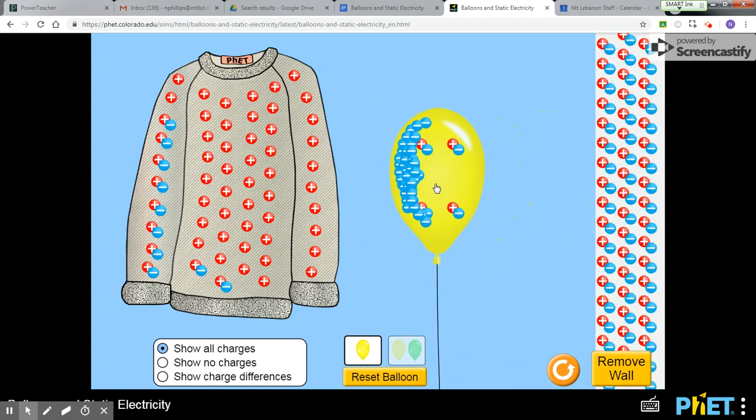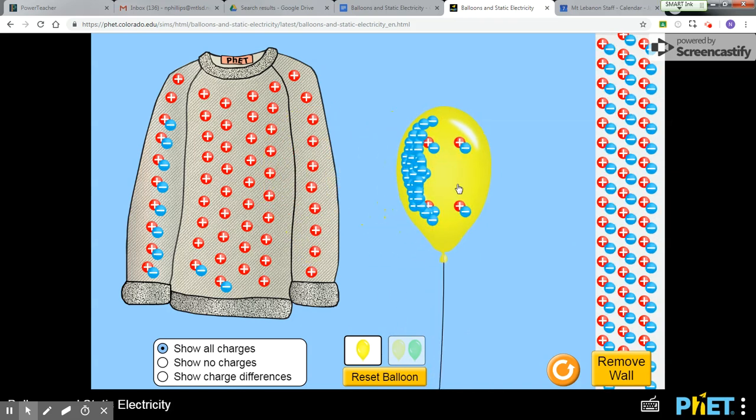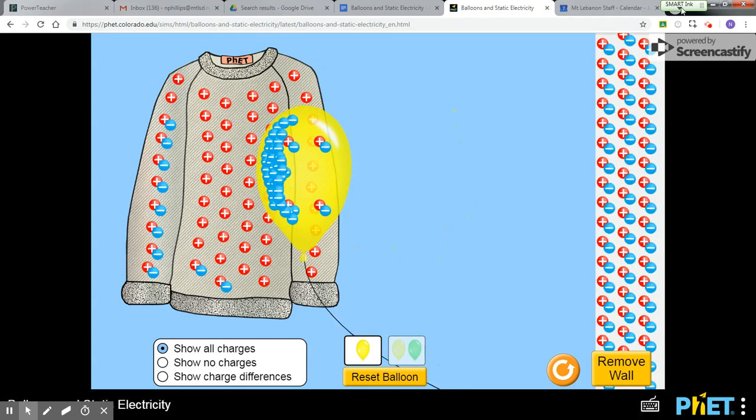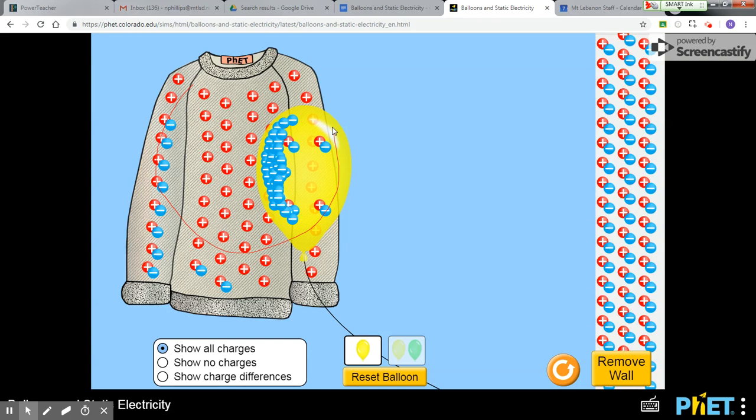Well, so the bigger the difference in charge between two objects, the stronger the force of attraction. Likewise, the greater the similarity in charge between two objects, the greater the repulsion. But in this case, there is a much greater difference in charge between these two. The sweater and the balloon, there's a much greater difference in charge. So positive here, and then so negative.